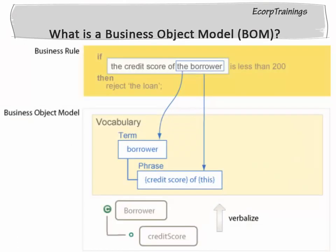Business Object Model: the BOM enables you to make business rule editing user-friendly by providing tools to set up a natural language vocabulary. With this vocabulary, policy managers can describe their business logic in a business rule language.